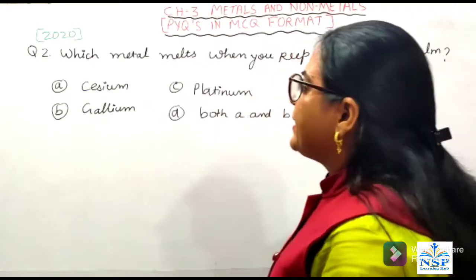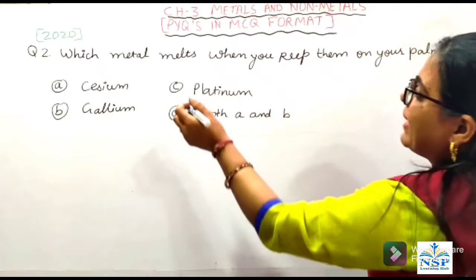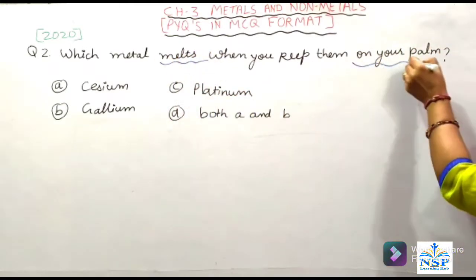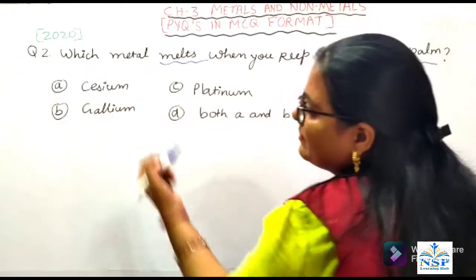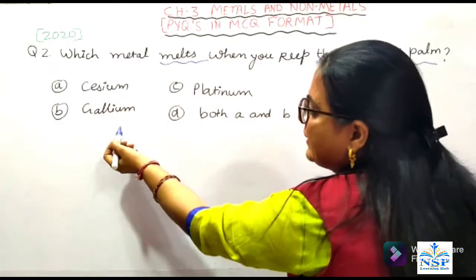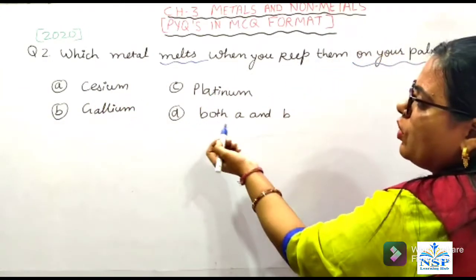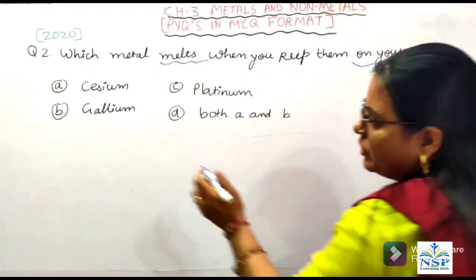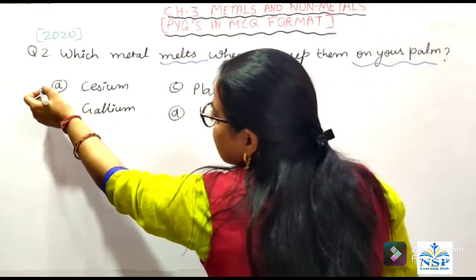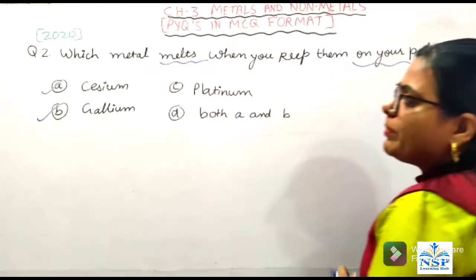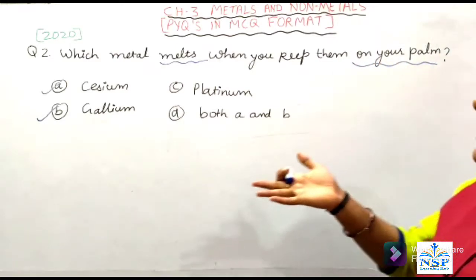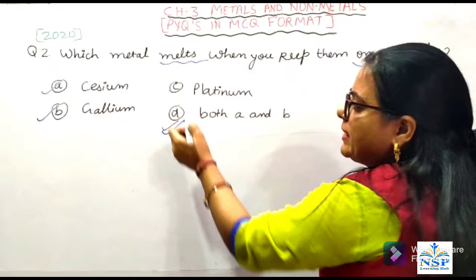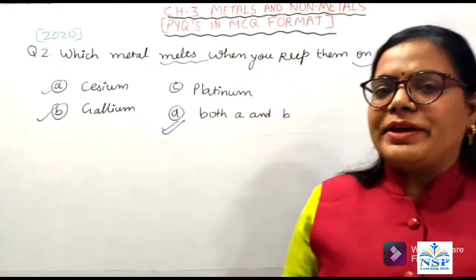Question number 2: which metal melts when you keep it on your palm? Options: (A) Cesium, (B) Gallium, (C) Platinum, (D) Both A and B. कौन सा option सही होगा? तो आपका cesium और gallium दोनों metals ऐसे हैं कि जब आप उनको अपने palm पर रखते हैं तो वो melt हो जाते हैं। तो option D is right — both A and B.